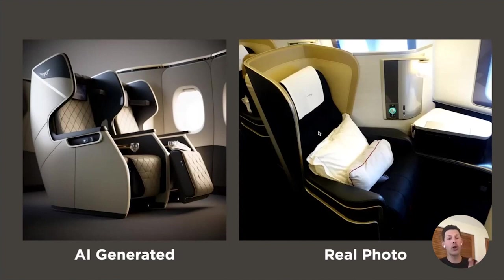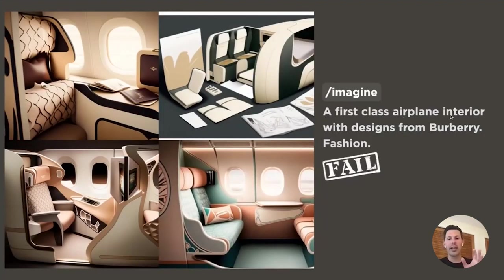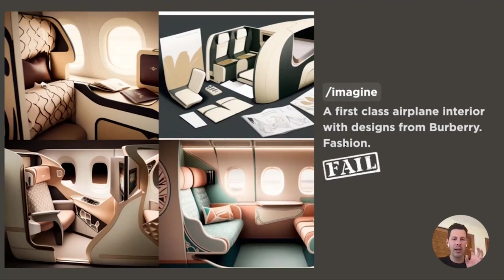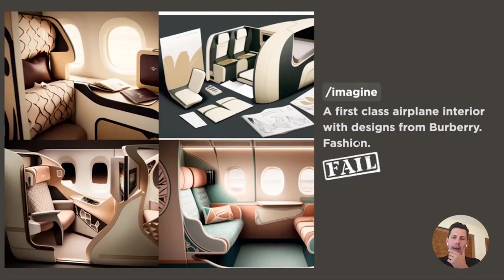I wrote something different: 'a first class airplane interior with designs from Burberry fashion' — and 'fashion' was a separate word. What came back went into a weird world of pastels and peach colors, and the designs were over-designed. I think the keyword 'fashion' was the wrench in the gears that threw me into the wrong trajectory. That's what you have to do when you see images like this — look back at your prompt and discover what caused the problem, and think how a machine interprets your words.